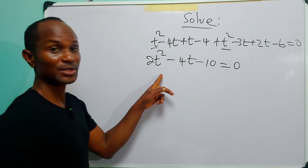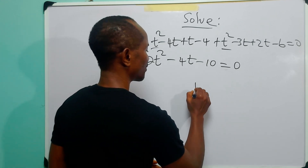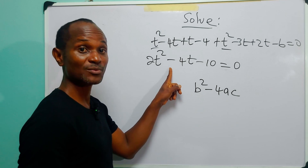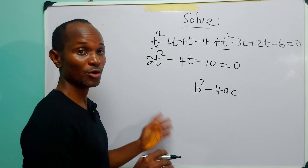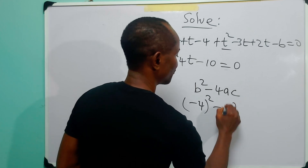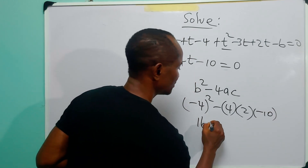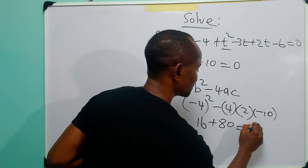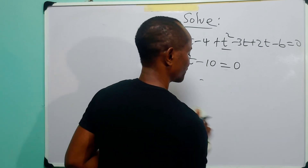I don't think we can factorize this equation, but let us find out. To know whether you can factorize a quadratic or not, you find b² - 4ac. If it's a perfect square the equation can be factorized; if not, you must use the quadratic formula or complete the square. Here b = -4, a = 2, c = -10, so: (-4)² - 4(2)(-10) = 16 + 80 = 96. Since 96 is not a perfect square, we cannot factorize, so we use the quadratic formula.